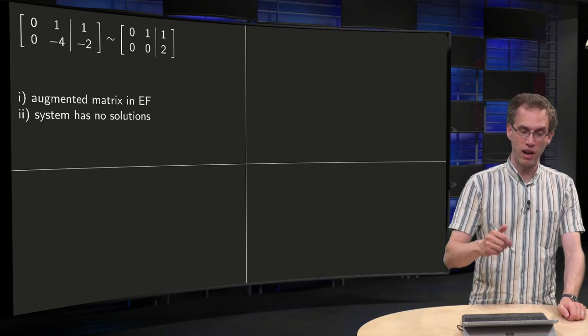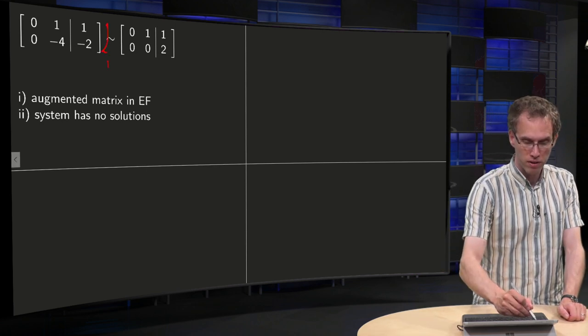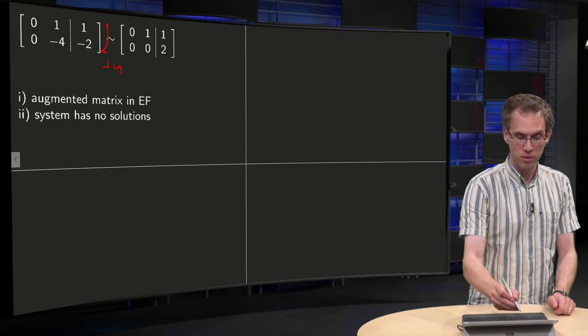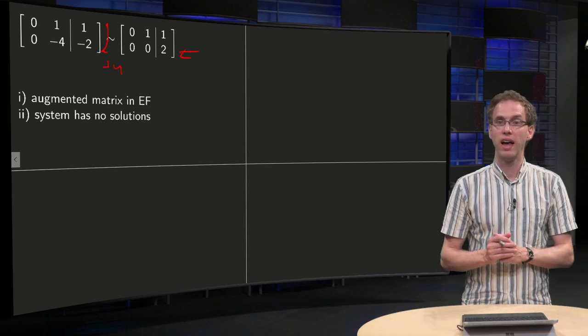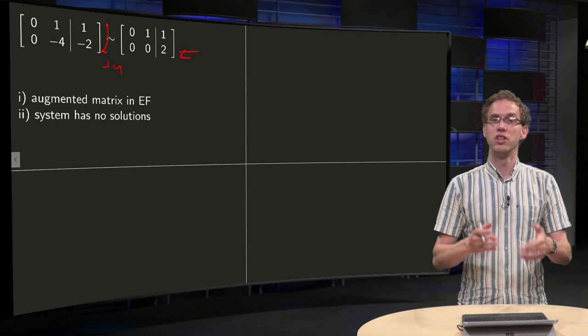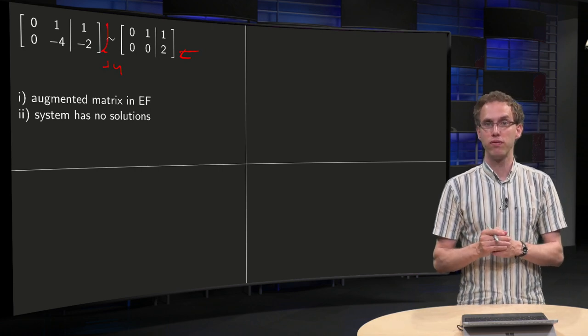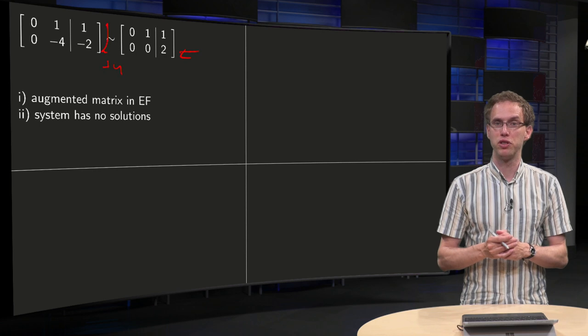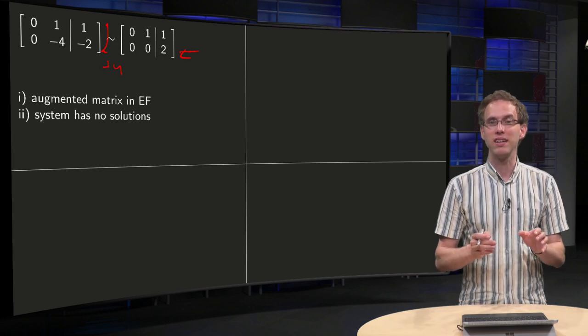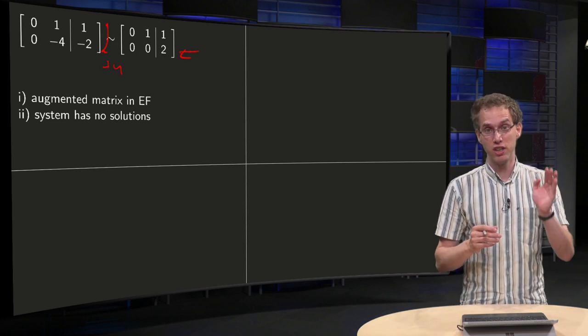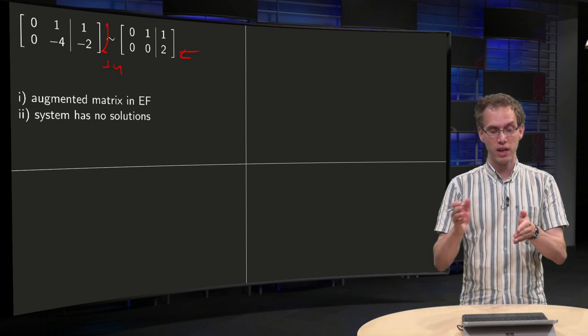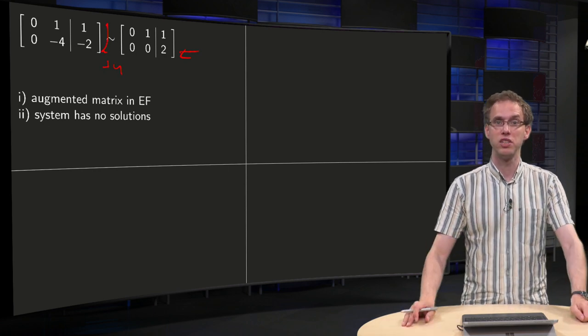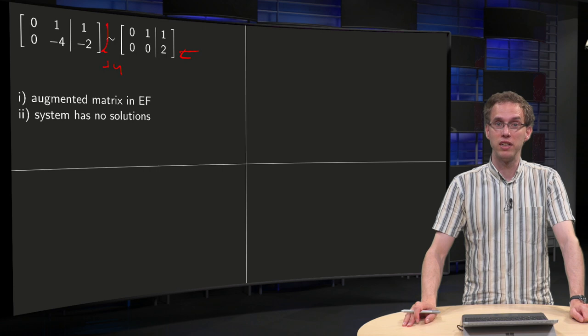you see that you get over here an inconsistent equation. So now we are in echelon form. We have a free variable still of course, but that doesn't really matter, because our last equation says zero times x1 plus zero times x2 equals two, so it is inconsistent, so our system has no solutions.